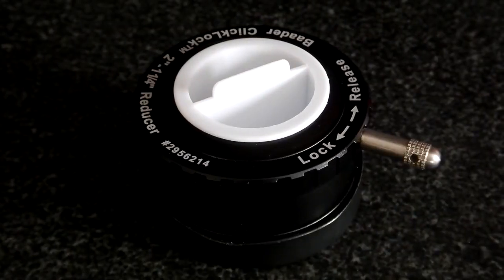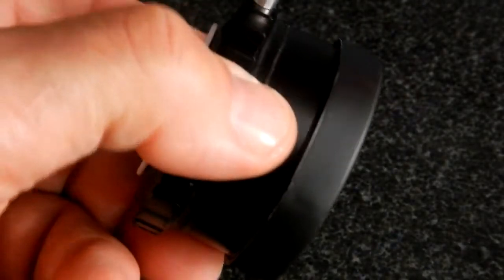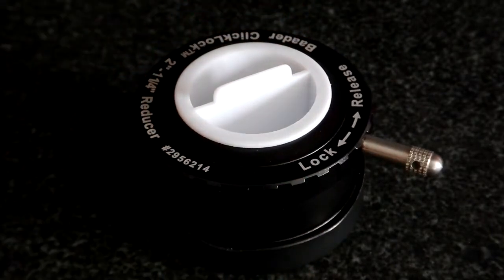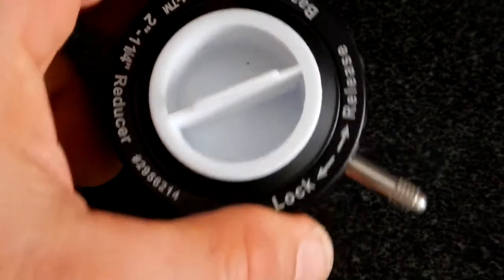Now it does come with not only a top cap but a bottom cap. If you aren't using it and you're going to put it away, you can cap off both ends. If this was going to be in your telescope, all you would need is one cap for the top, but I thought it was pretty cool that it came with the bottom cap.